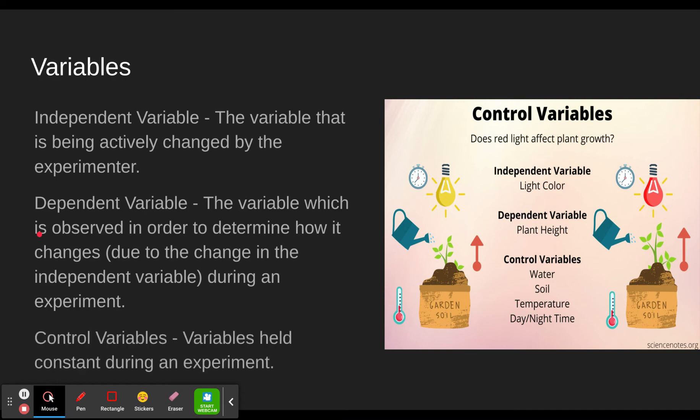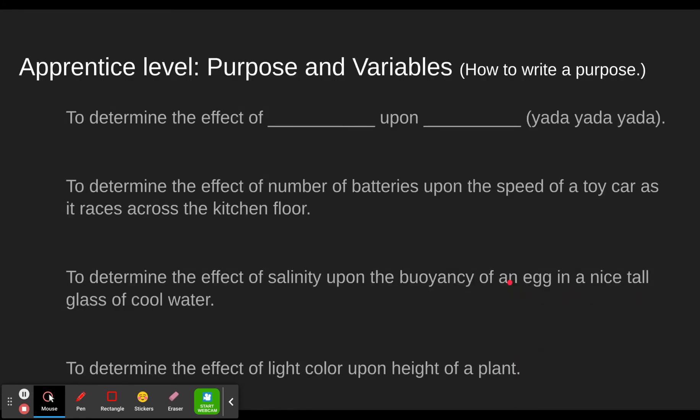And then finally we have control variables, which are variables that are held constant. So we want to make sure we give them both the same amount of water, right? If we give this one five times as much water or this one no water at all, then clearly the only thing we're testing is not the light. The amount of water might have an effect on how big each of these grow. So we want to only change one thing and watch how it affects one thing and hold everything else constant. We don't want to check one after a day and the other one after a week because probably that extra six days to grow might have had an impact. So if we want to see the effect of the light on the height of the plant, we have to keep all these other things constant.